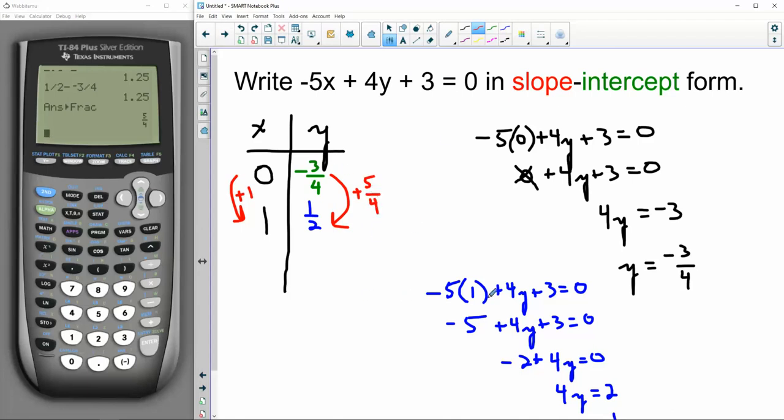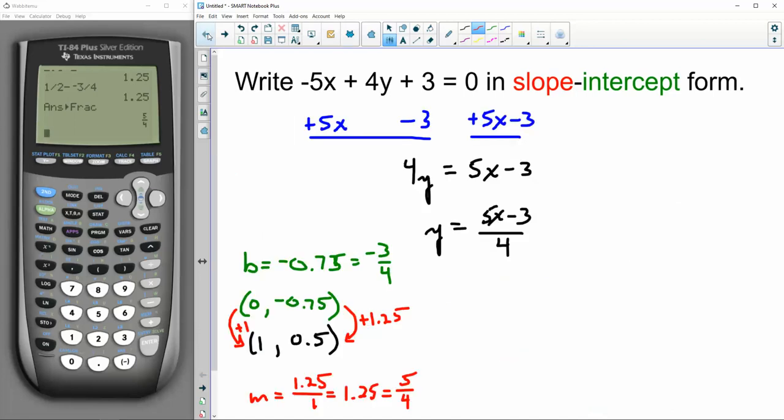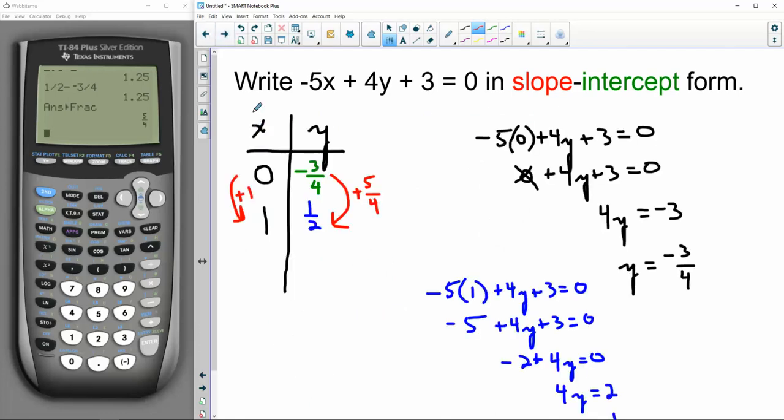So I plugged these numbers in, 0 and 1. I could have plugged in any numbers, but 0 makes sense because I want to know the y-intercept anyway. Okay, and look, I got the green number I wanted, negative 3/4, and I got the red number I wanted, 5/4, same thing we've gotten the other times.